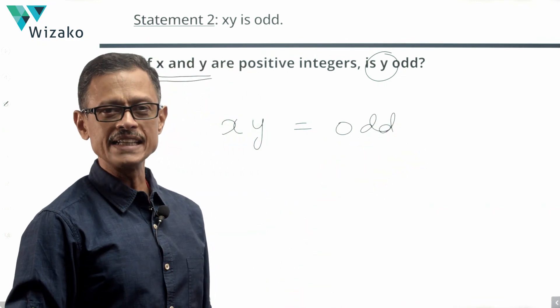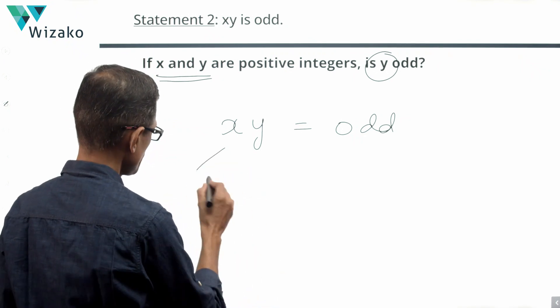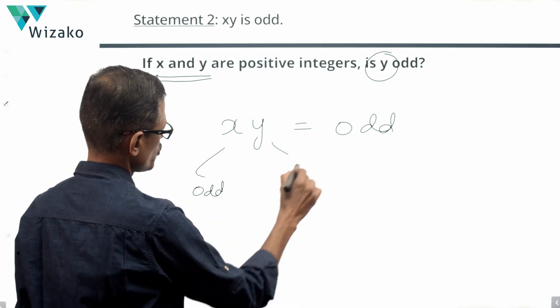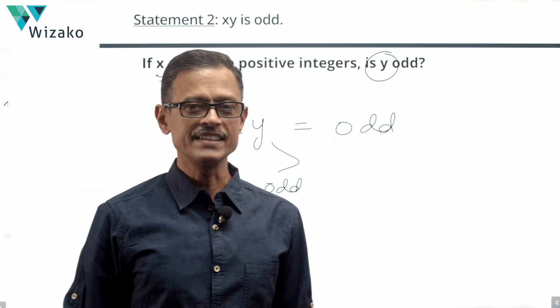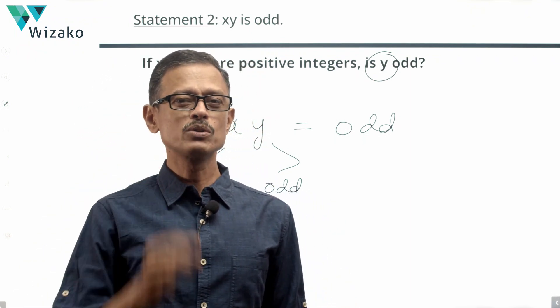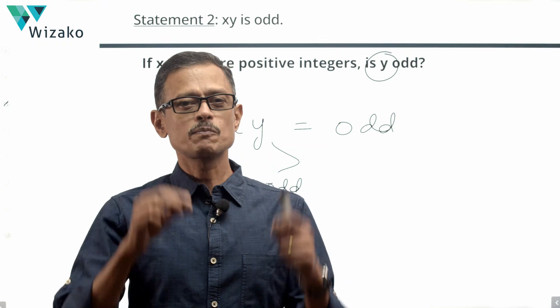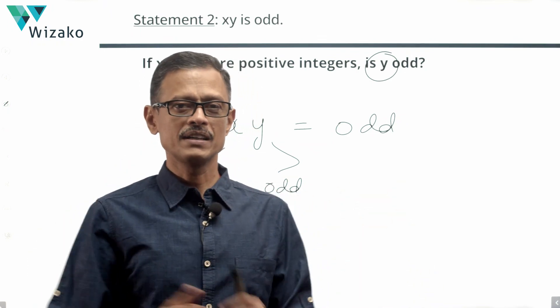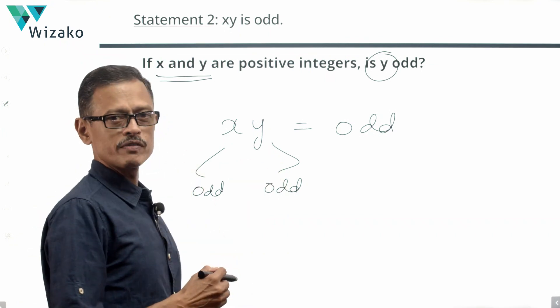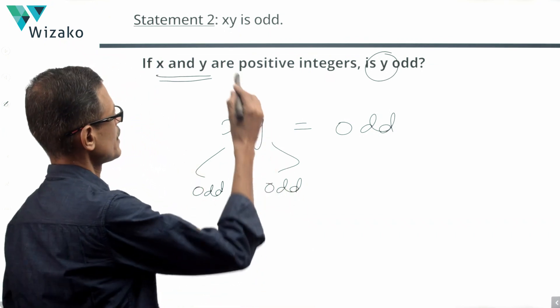x should be odd, so should y. So if x and y are positive integers and the product of both those integers is odd, that's possible only when y is odd, as much as x should also be odd. Do we have a conclusive answer about whether y is odd? Yes, from statement two we are able to answer conclusively that y is odd.